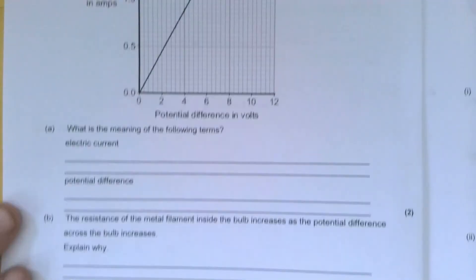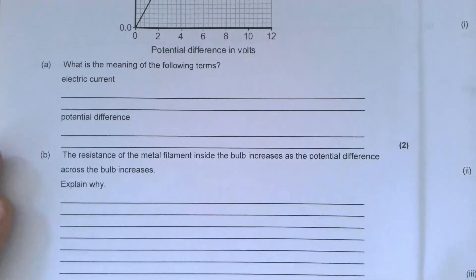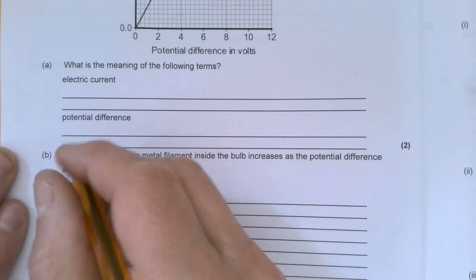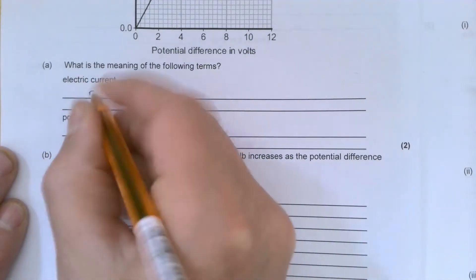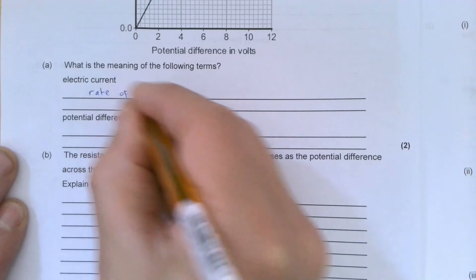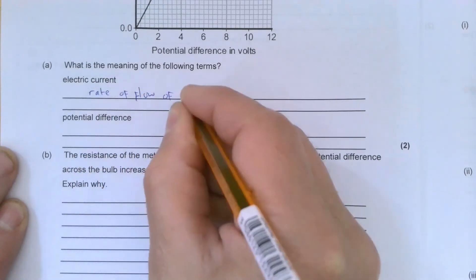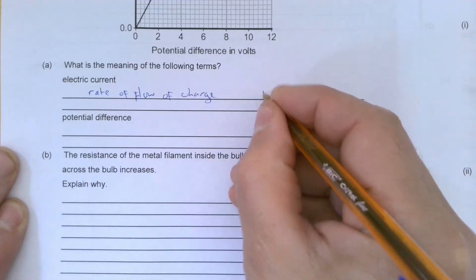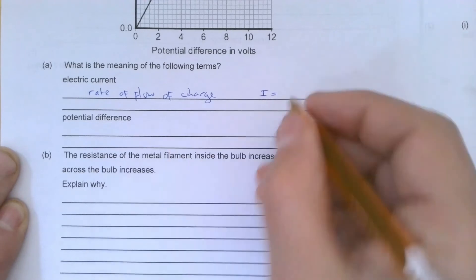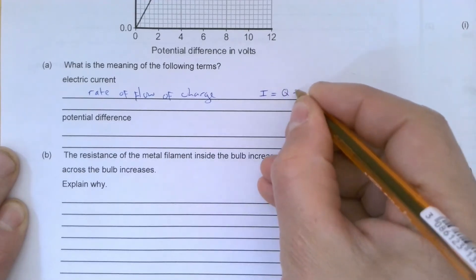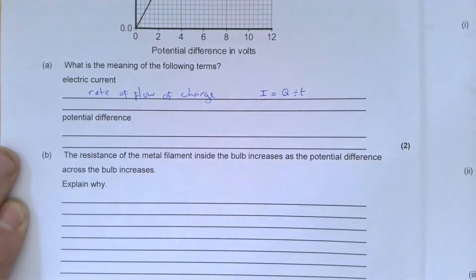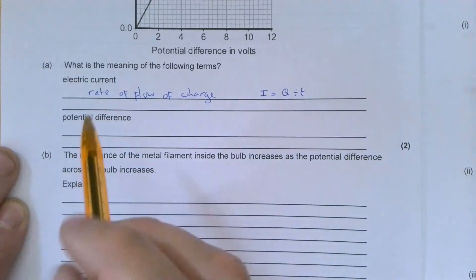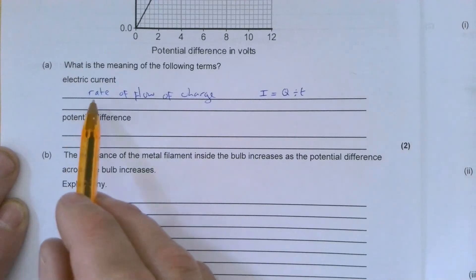Question A: what is the meaning of the following terms? Electric current. Electric current is the rate of flow of charge. You might also use this as an equation: I is equal to Q which is the amount of charge each second. So the rate of flow of charge, or the rate of flow of electrons. Normally we'd say charge because it doesn't necessarily have to be negative, could be something else, any charged particle.